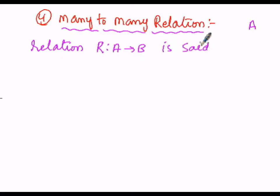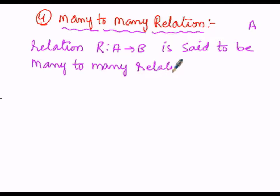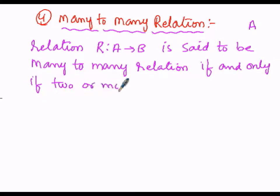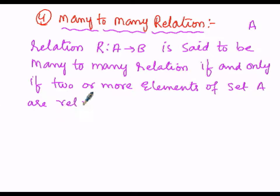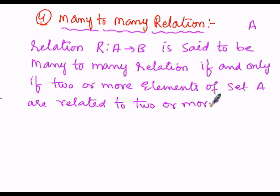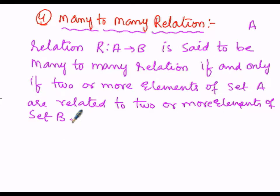A relation R from A into B is said to be a many-to-many relation if and only if two or more elements of set A are related to two or more elements of set B. Such a type of relation is called a many-to-many relation.